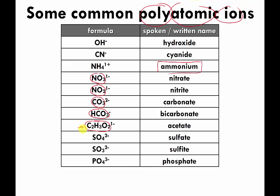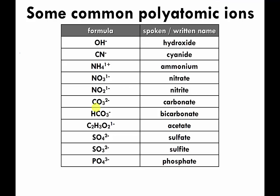Polyatomic ions can get really elaborate. This one, called an acetate ion, has two carbons, three hydrogens, and two oxygens — all those atoms — and it still only has a charge of negative one. You can have polyatomic ions with positive charges, negative charges, negative two charges — pretty much anything. So I want you to be able to look at a table like this and understand that these atoms travel as a pack and have an electrical charge associated with that pack.